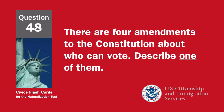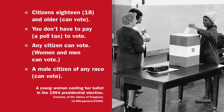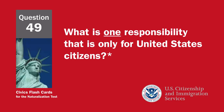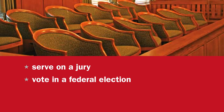There are four amendments to the Constitution about who can vote. Describe one of them. Citizens 18 and older can vote; you don't have to pay a poll tax to vote; any citizen can vote; women and men can vote; or a male citizen of any race can vote. What is one responsibility that is only for United States citizens? Serve on a jury, or vote in a federal election.